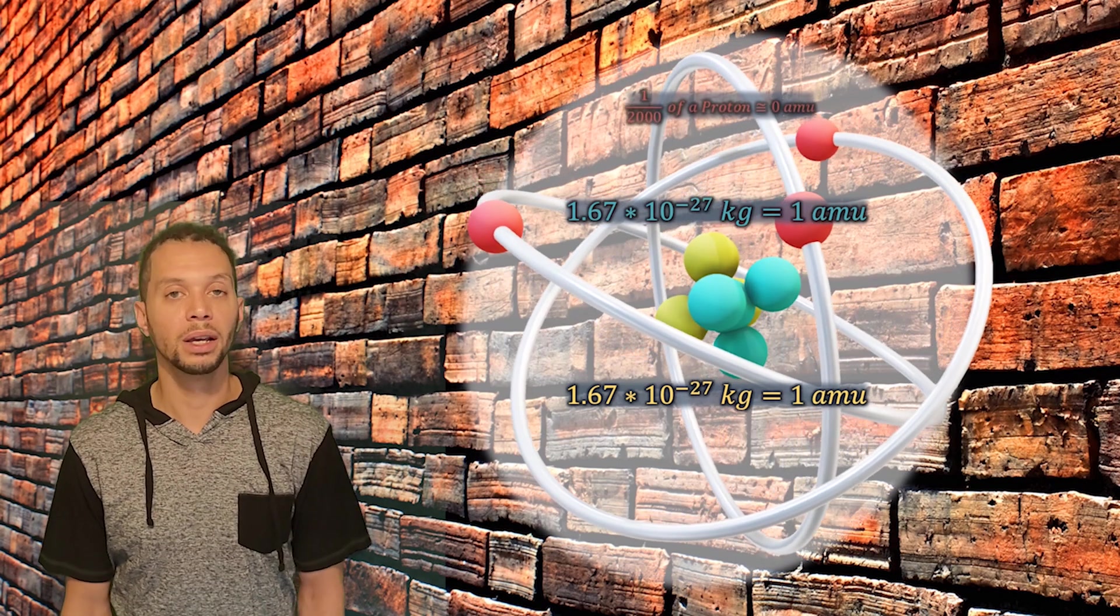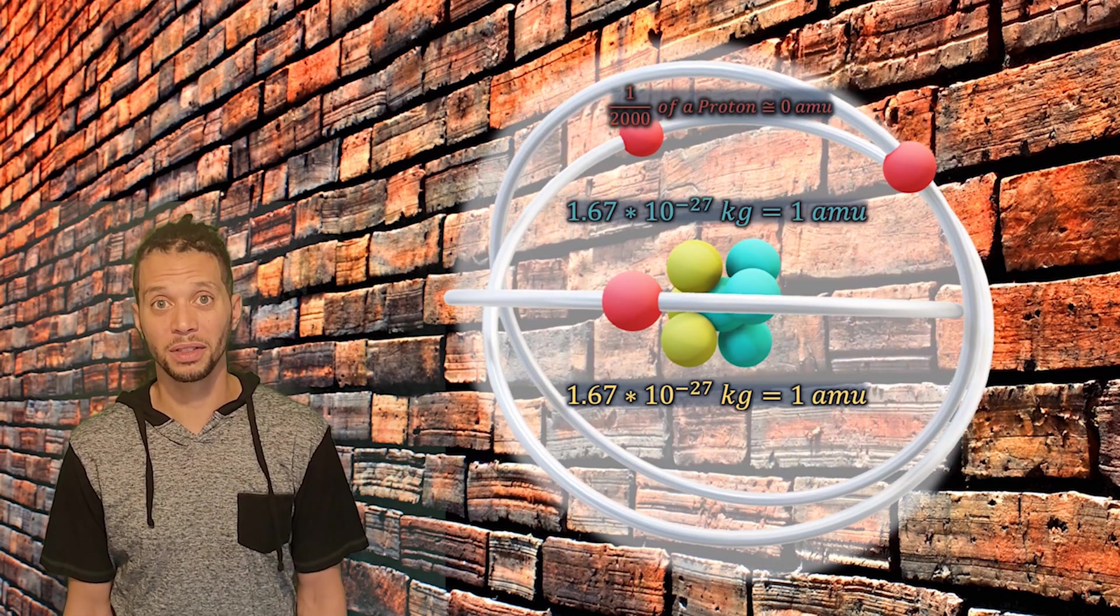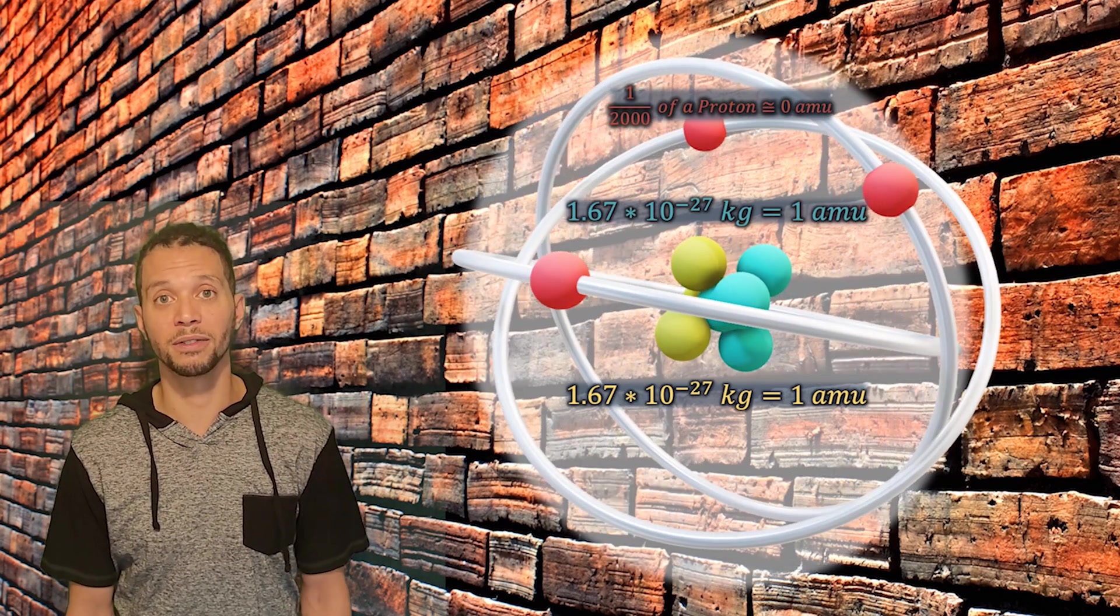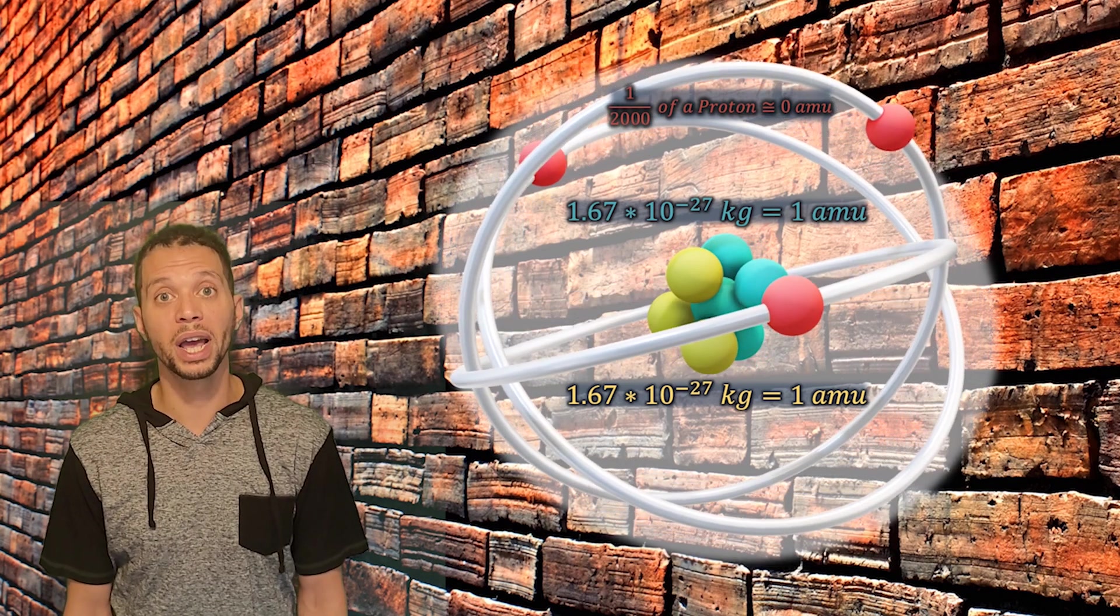The mass of an electron is even smaller than that. And with the size of one two-thousandth the size of a proton, it contributes virtually nothing to the mass of an atom. And because of that, we give it a value of zero AMUs.